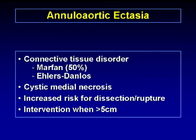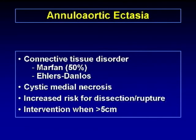Annuloaortic ectasia is usually seen with connective tissue disorders — 50% of patients have Marfan syndrome, but it can also be seen with Ehlers-Danlos syndrome. The pathology is cystic medial necrosis, and it can also be seen in patients without connective tissue disorder. Patients have an increased risk of dissection and rupture. An important measurement from chest CT is the diameter of the ascending aorta. For thoracic aortic aneurysm, imminent rupture risk is at six centimeters; however, for patients with connective tissue disorders, the threshold is lower — a five centimeter aneurysm warrants surgical intervention.